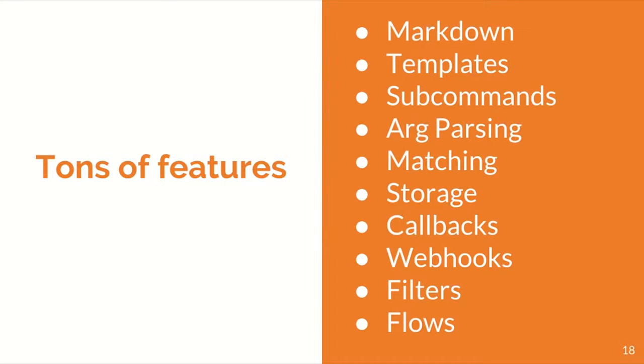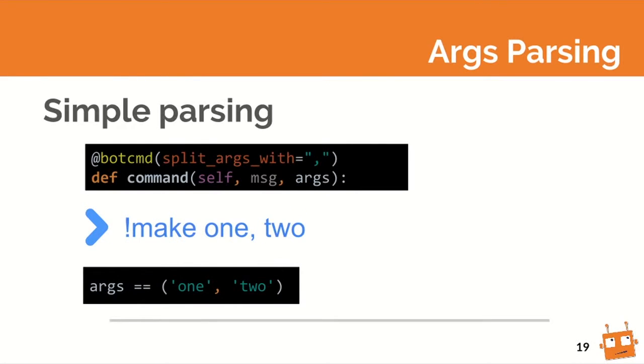We have a ton of features at that point. One facility is for parsing parameters when you get commands. We added a specific facility to simply split the argument string, and that gives you, instead of a string in args, a tuple with the list of arguments already split. These are things we noticed our users doing over and over — just a little shortcut for everybody.